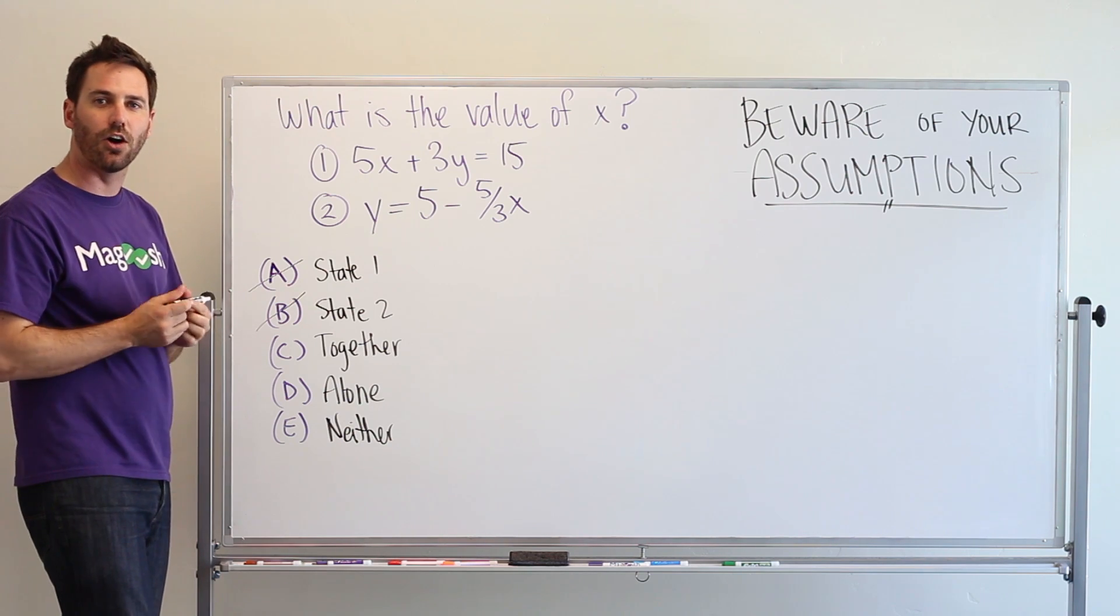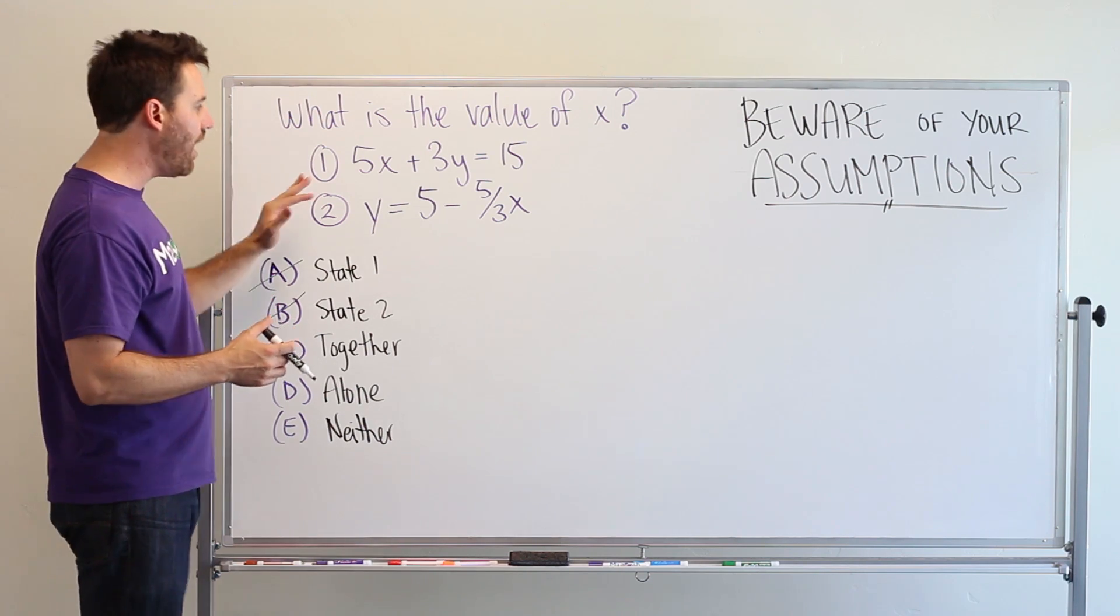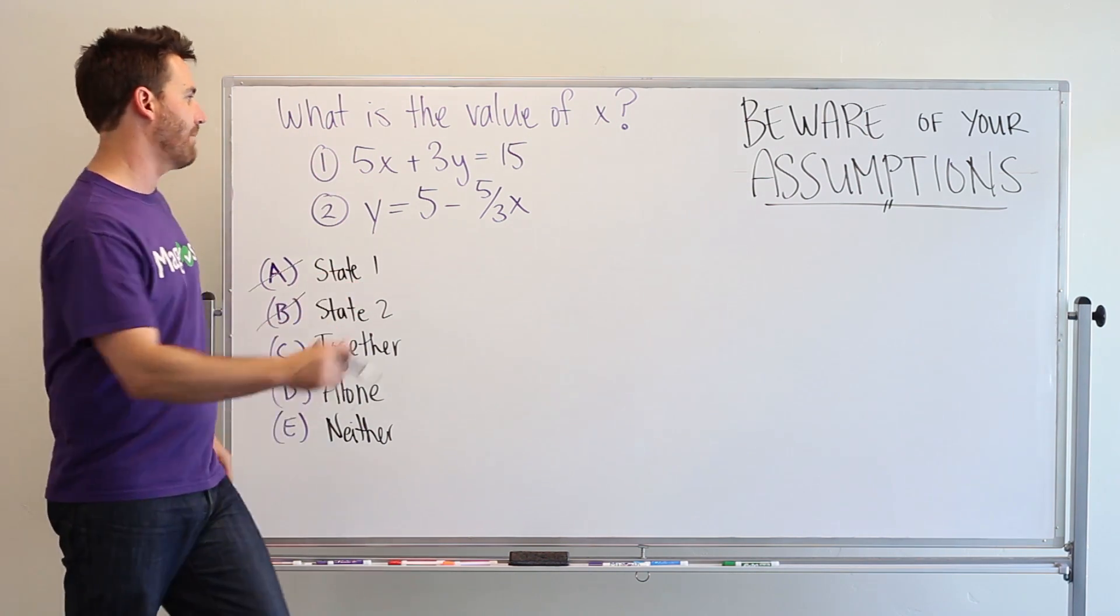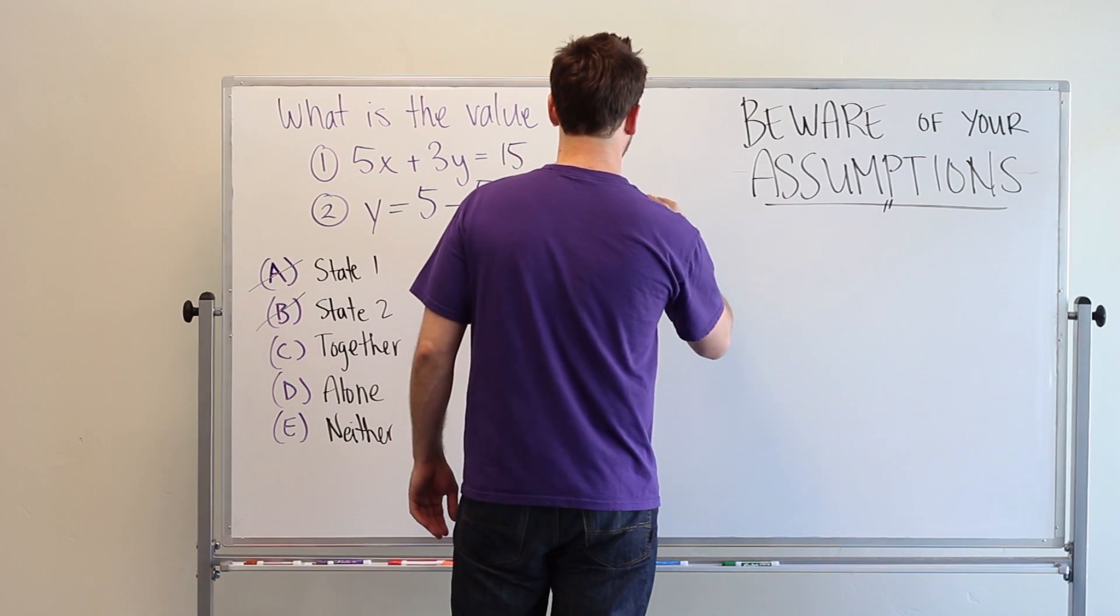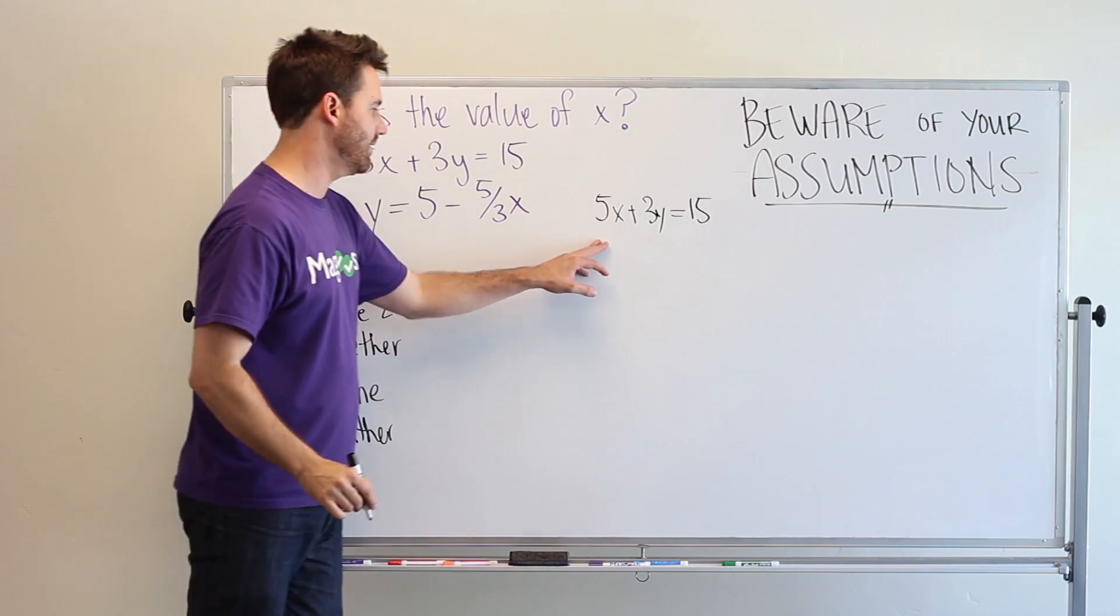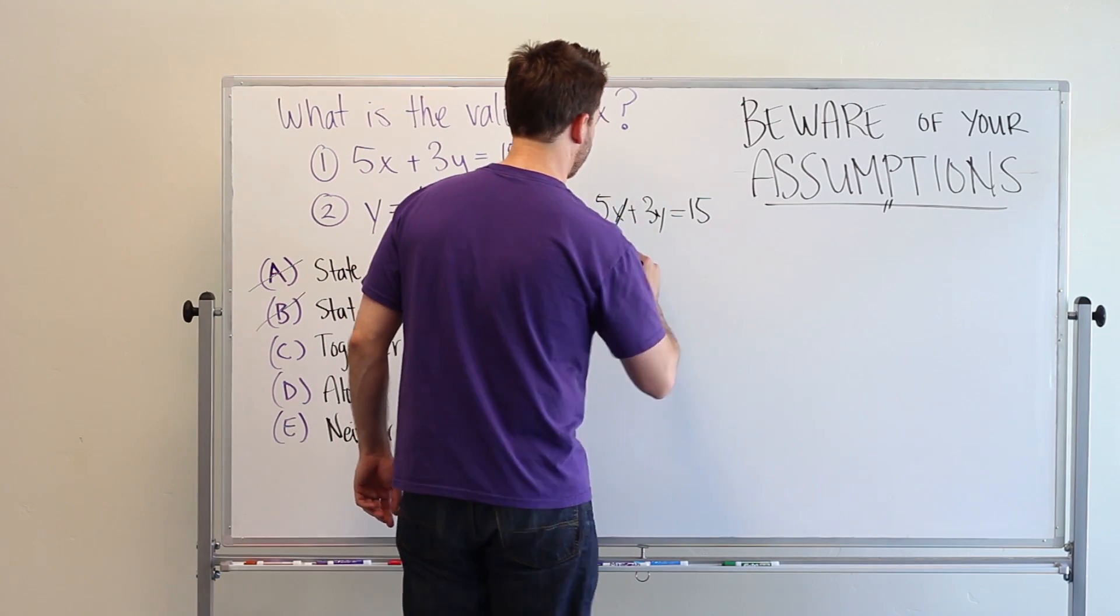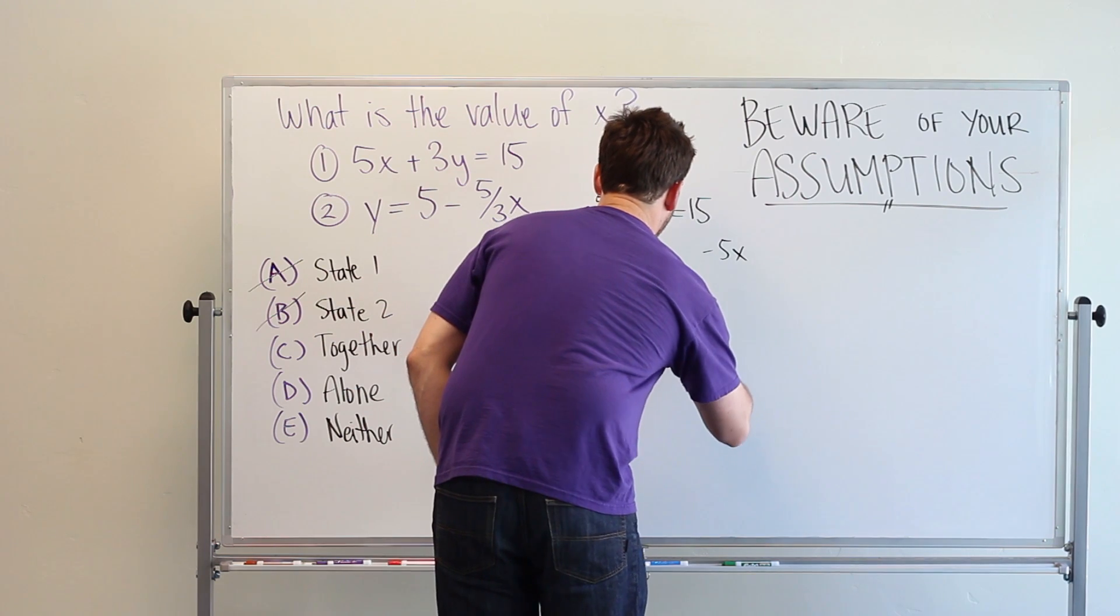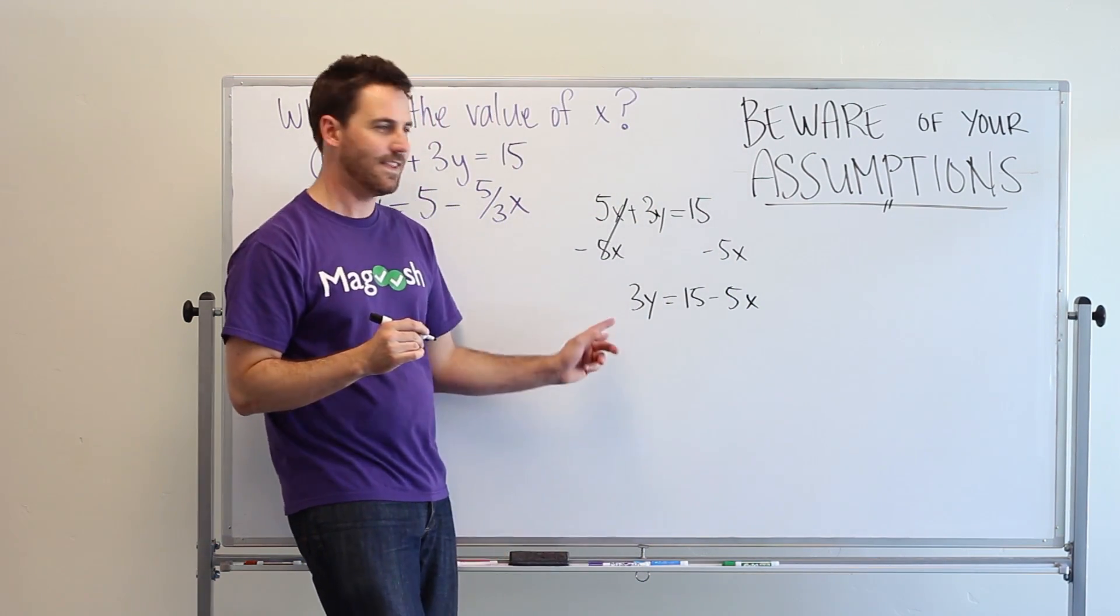This is where you need to pay attention. Together, you think, oh, I can solve for these together and get the value of x. But, let's work statement one and see if we can make it equal to y and see what happens. So, if we come over here, 5x plus 3y equals 15. Okay, so that's statement one. Let's move our 5x over. So, minus 5x minus 5x.